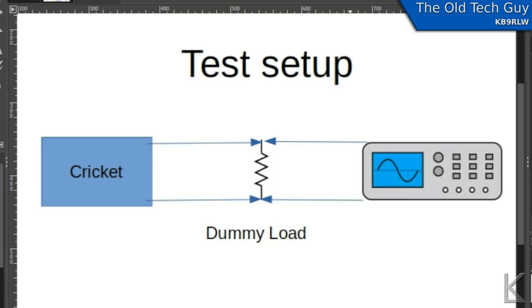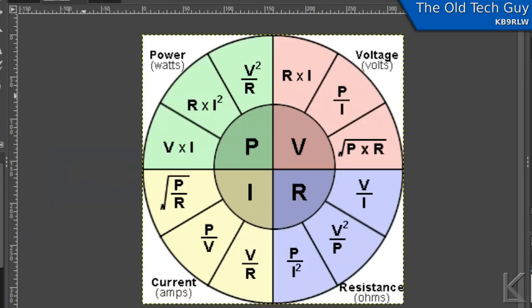So what we're gonna do today is we're going to measure the cricket. This is going to be my test setup I'm going to take the cricket and I'm going to feed it into a dummy load and then I'm going to use an oscilloscope to measure the voltage across the dummy load and once I have the voltage and a known resistance I'm also going to have to measure my dummy load by the way at the frequency that I'm going to be operating at 7030 kilohertz to get a precise measurement of its resistance.